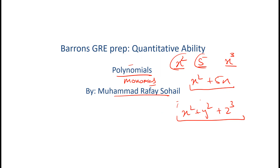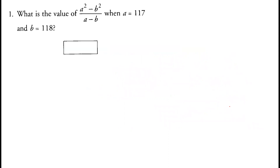This whole expression is known as a term. So x squared is also a term, and x squared plus y squared plus z cubed is also known as a term. Now let's do the first question: a squared minus b squared, whole over a minus b.